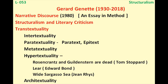So that is all about transtextuality — the main concept given by Gerard Genette, a French literary structuralist theorist. His works include Structuralism and Literary Criticism and Narrative Discourse. In transtextuality there are five types: intertextuality, paratextuality, metatextuality, hypertextuality, and architextuality. This lesson also concludes our coverage of the important writers of structuralism. The next lesson will begin a new topic. Thanks for watching and have a great day.